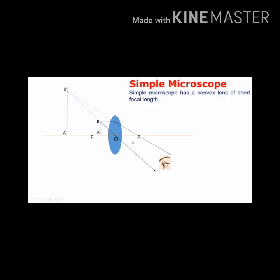Good morning students. Today we are going to see about 10th standard science, unit on optics. In the last video we saw about defects in the human eye - the two main problems: myopia and hypermetropia. Today we are going to see about the microscope, an optical instrument which helps us to see tiny objects. It is classified into two types: simple microscope and compound microscope.